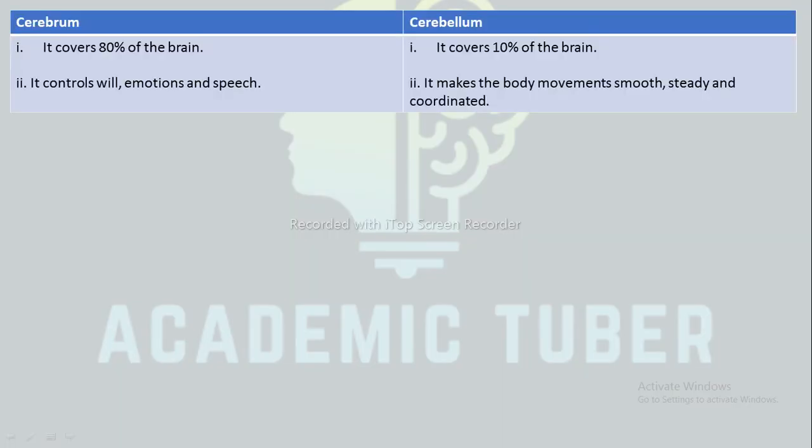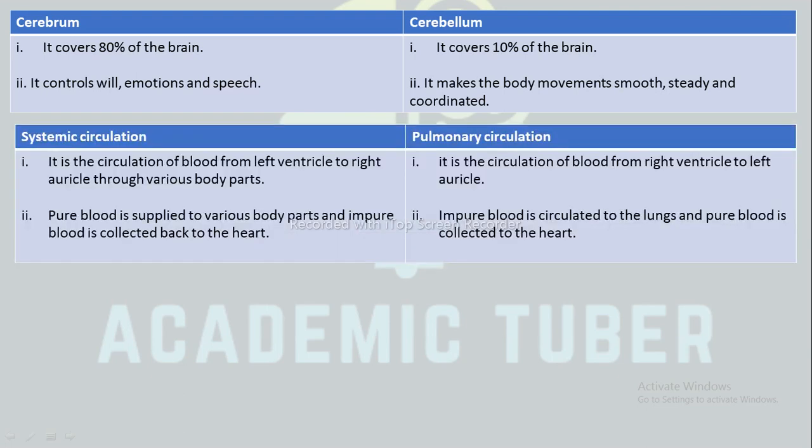The first difference is between cerebrum and cerebellum. Cerebrum covers 80% of the brain, whereas cerebellum covers only 10% of the brain. Cerebrum controls will, emotion, and speech, whereas cerebellum makes body movement more steady and coordinated.